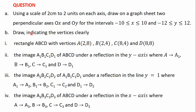B, draw indicating the vertices clearly: rectangle ABCD with vertices A at coordinates (2, 8), B at coordinates (2, 4), C at coordinates (8, 4), and D at coordinates (8, 8).